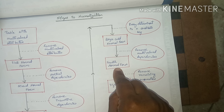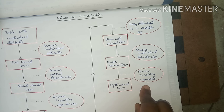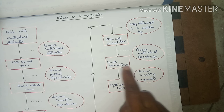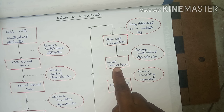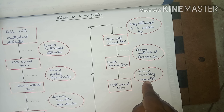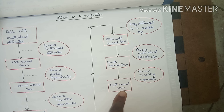Remove multi-valued dependencies and the table will come into Fourth Normal Form. After that, if we remove all the remaining anomalies from the Fourth Normal Form table, then the table will be in Fifth Normal Form.